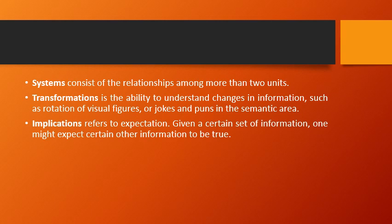Rupantaran ka arth hota hai apni buddhi ka prayog karna — jo bhi information hum grahan kar rahe hain usmein changes ko samajhna. The sixth and last product is implication — anuprayog — which refers to expectation. Given a certain set of information, one might expect certain other information to be true — koi ek information ki through kisi anay information ko jaana ya uska nishkarsh nikalna, usko prayog mein laana.